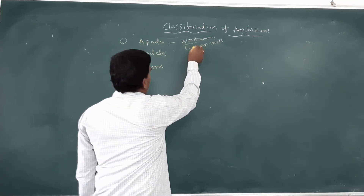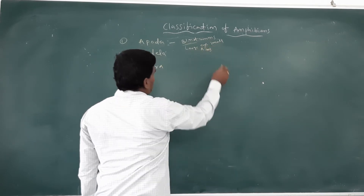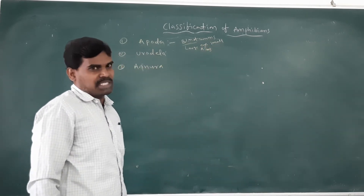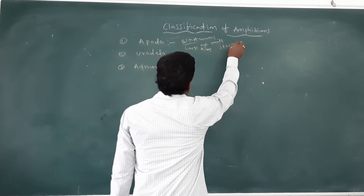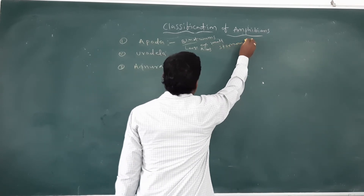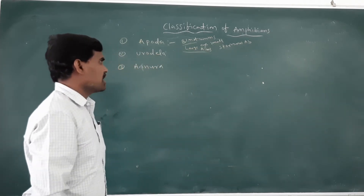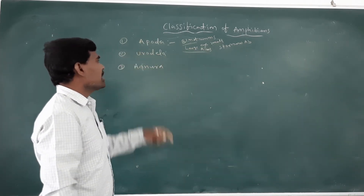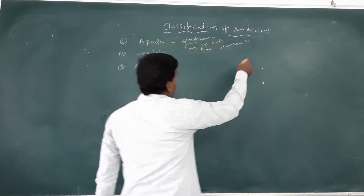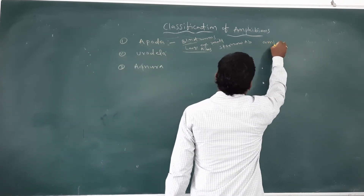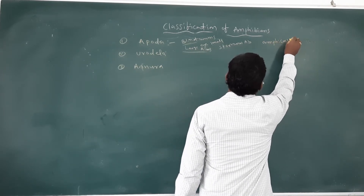The ribs are larger and non-functional. The sternum is absent in the Apoda class of Amphibians. The vertebra is the Amphicoelous type.